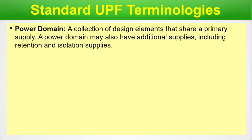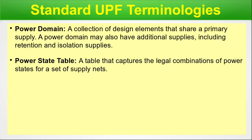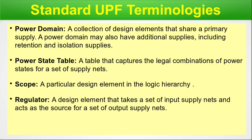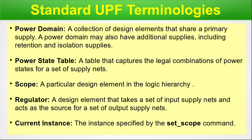A power domain is a collection of design elements that share a primary supply. A power domain may also have additional supplies including retention and isolation. A power state table is a table that captures the legal combinations of power states for a set of supply nets - essentially a lookup table for supply net combinations. A regulator is a design element that takes a set of input supply nets and acts as the source for a set of output supply nets. Current instance is the instance specified by the set_scope command.